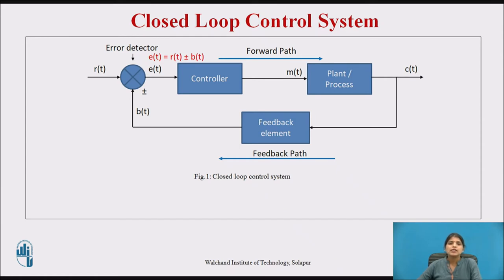Here R(t) is the reference input and B(t) is the feedback signal. The feedback signal B(t) is compared with the reference input R(t) with the help of an error detector, giving an error signal E(t) = R(t) ± B(t). When the feedback is positive we add it to the reference input, and when negative we subtract it.